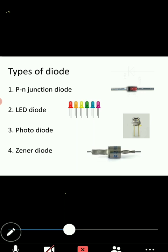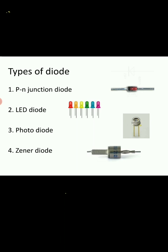In our syllabus, we are supposed to see the different types of diode. These are: PN junction diode, LED, photo diode, and Zener diode. If you see practically, these diodes will look like this — you can see the PN junction diode with anode and cathode, and the LED.